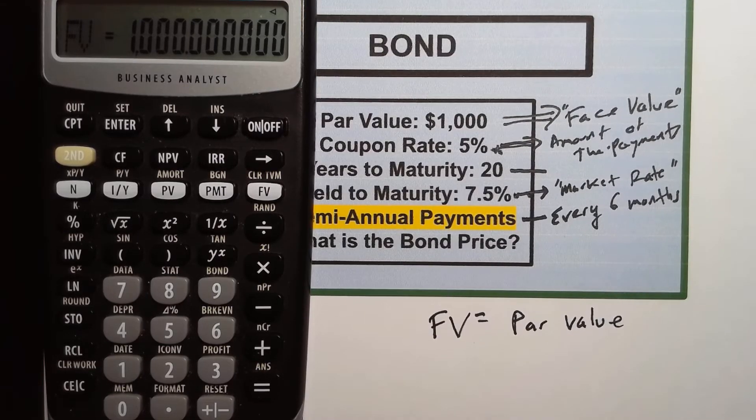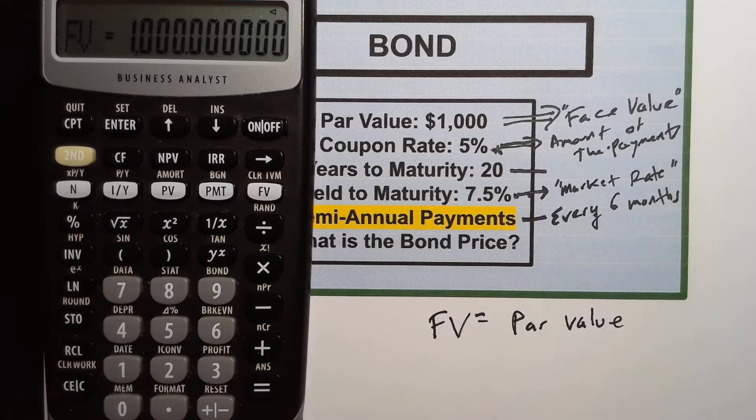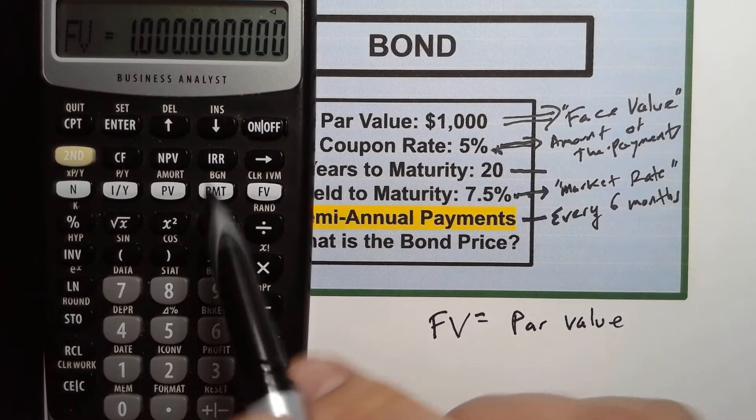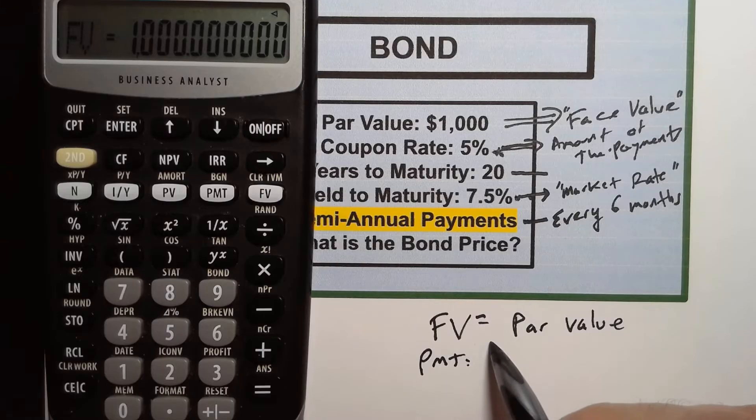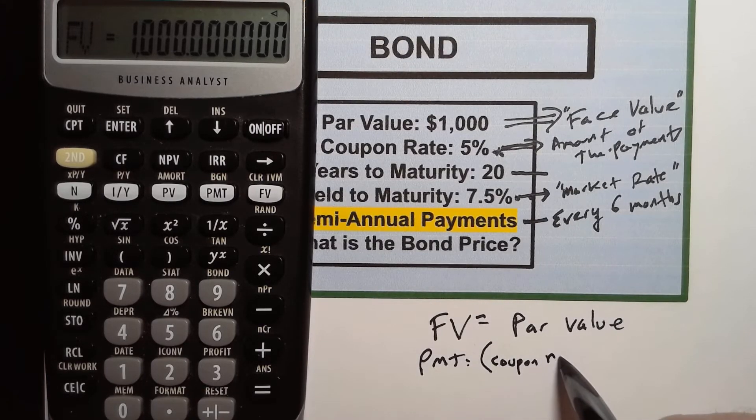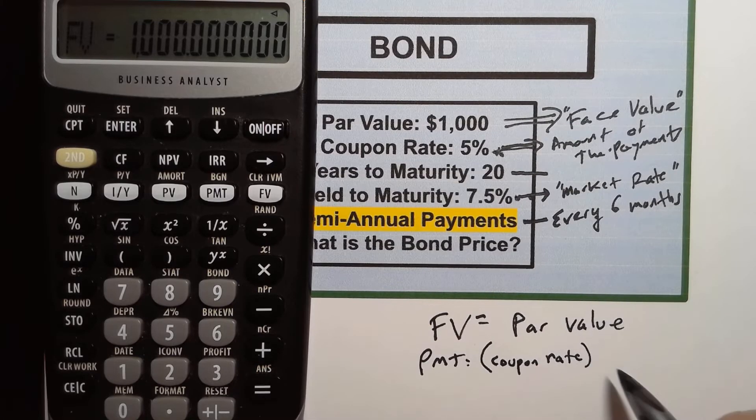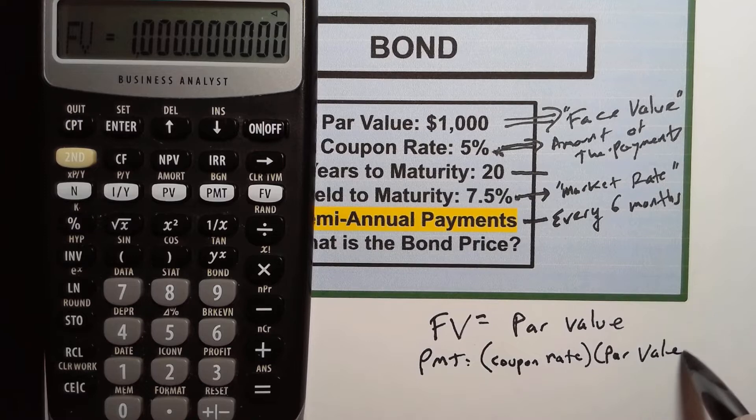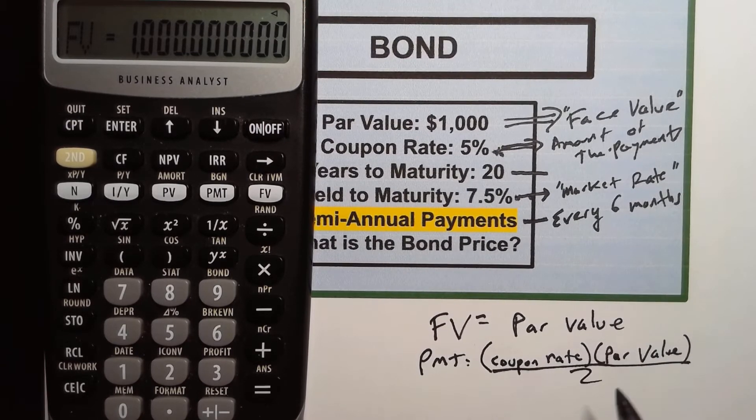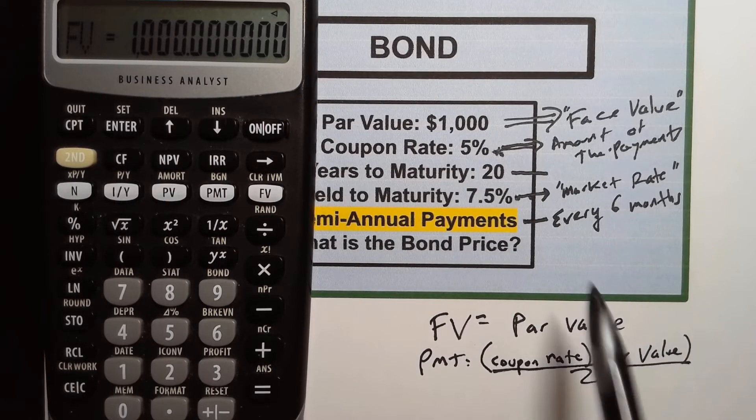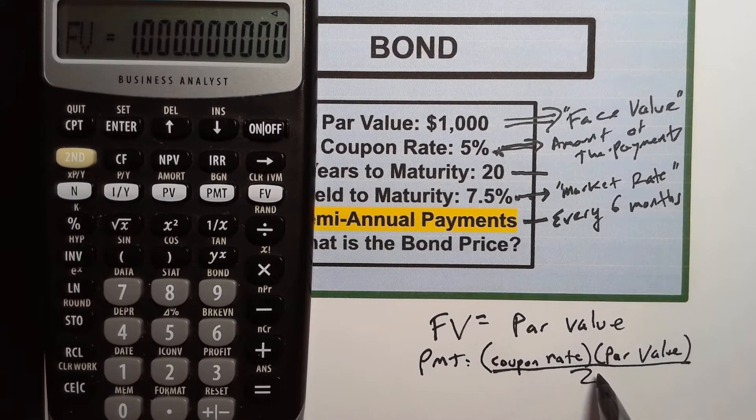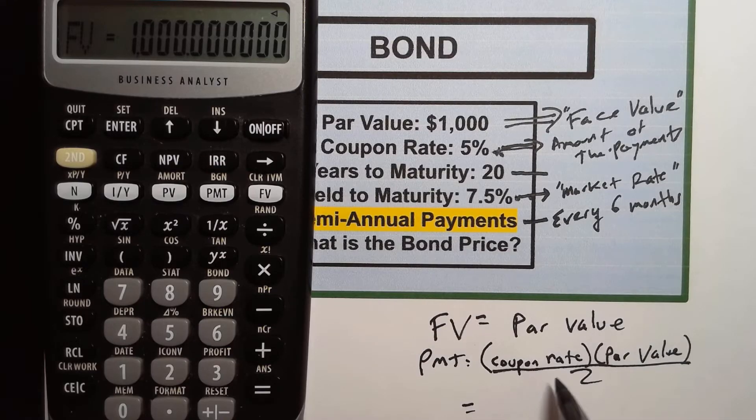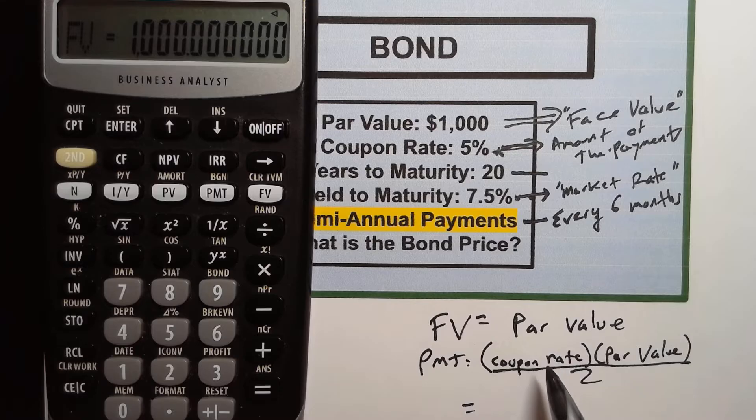The next thing that we want to do is what are the coupon payments. In other words what's the payment PMT. So the payment is going to be equal to the coupon rate times the par value and that whole thing is going to be divided by two. And the reason we're dividing it by two is it's a semi-annual payment. In other words you get two payments a year half the amount. Half the amount of payment is paid on one date six months later you get the other half.